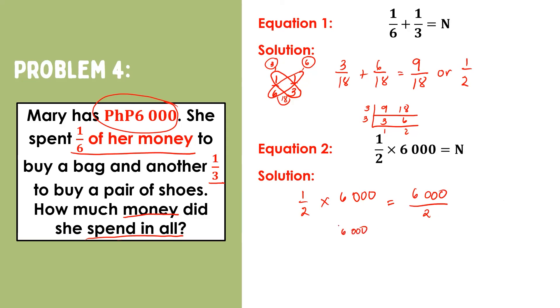Six-thousand divided by two will give us three-thousand. Therefore, Mary spent three-thousand pesos in all.